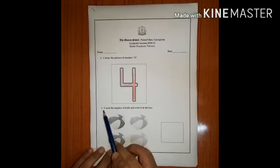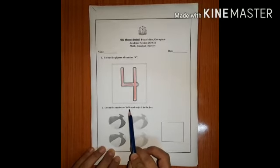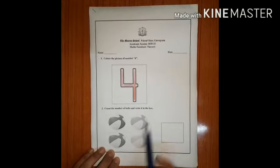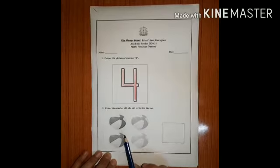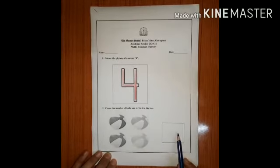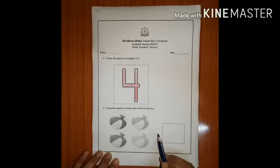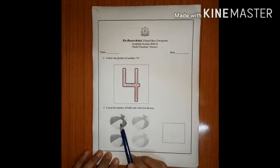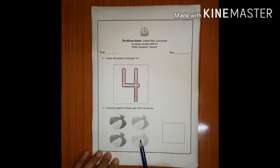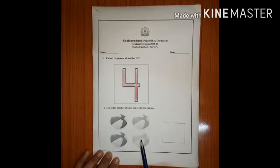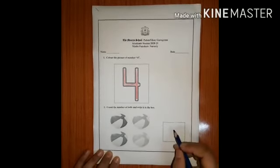The second question is, count the number of balls and write it in the box. We have to count these balls and write the number in the box. Let's count. 1, 2, 3, and 4. How many balls do we have? We have 4 balls. So let's write the number.